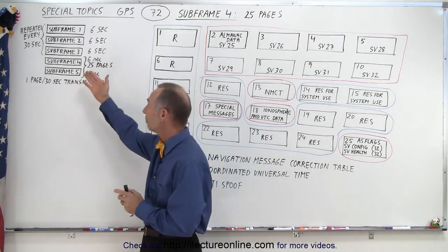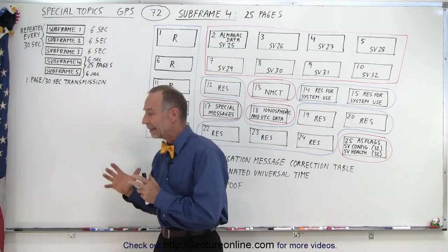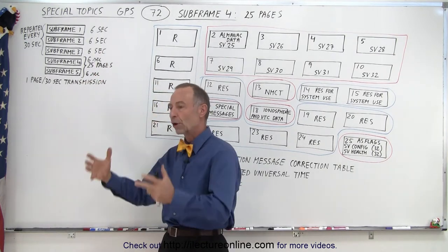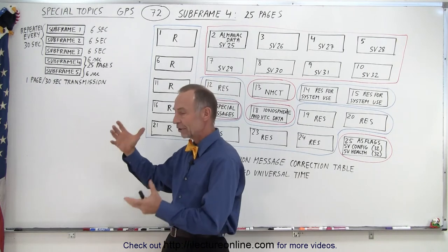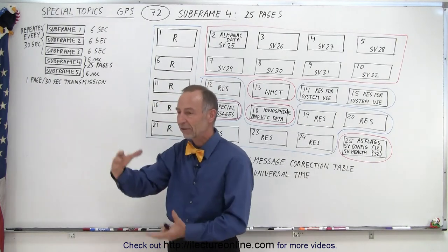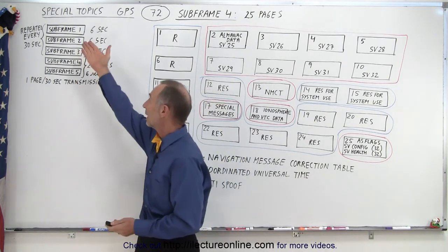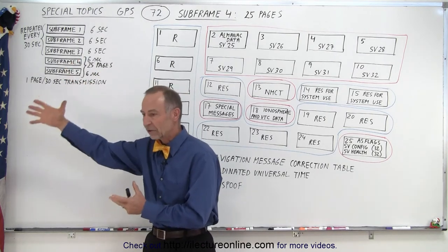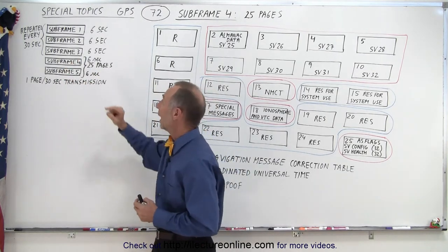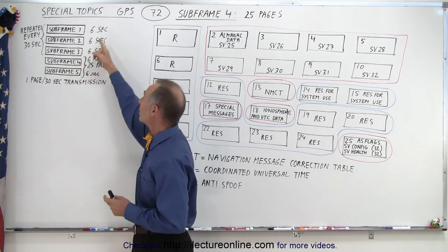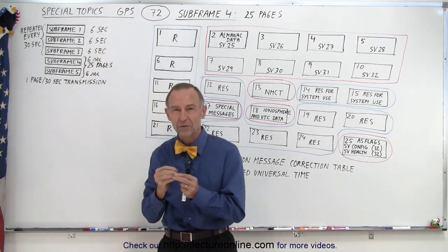Remember that there are five subframes, subframe 1 through 5, and they are sent in what we call frames of 30 seconds. Every 30 seconds a frame of data is sent and that takes 30 seconds to transmit from the space vehicles down to the receivers. And notice if there are five subframes, that means each subframe takes six seconds to send.